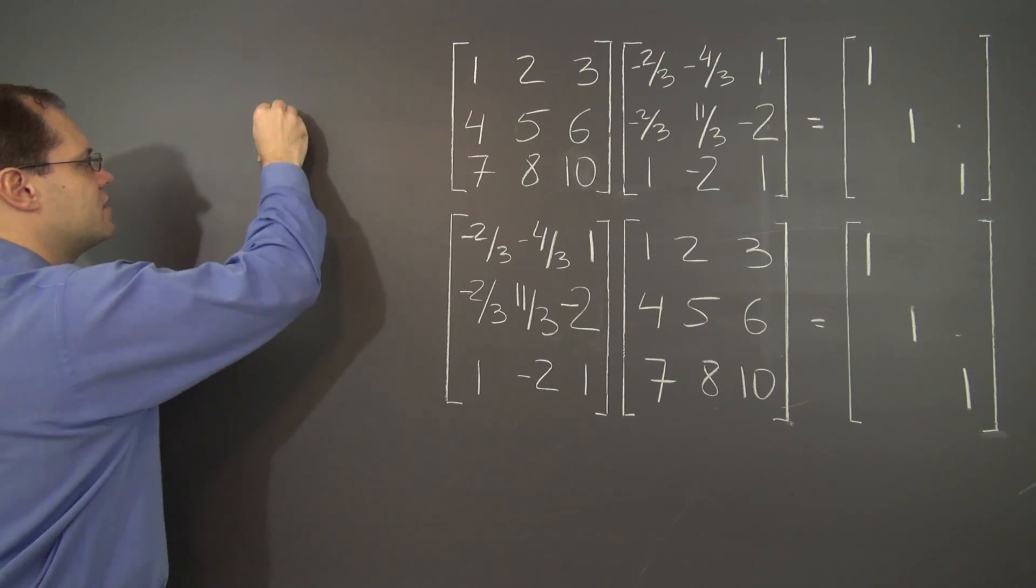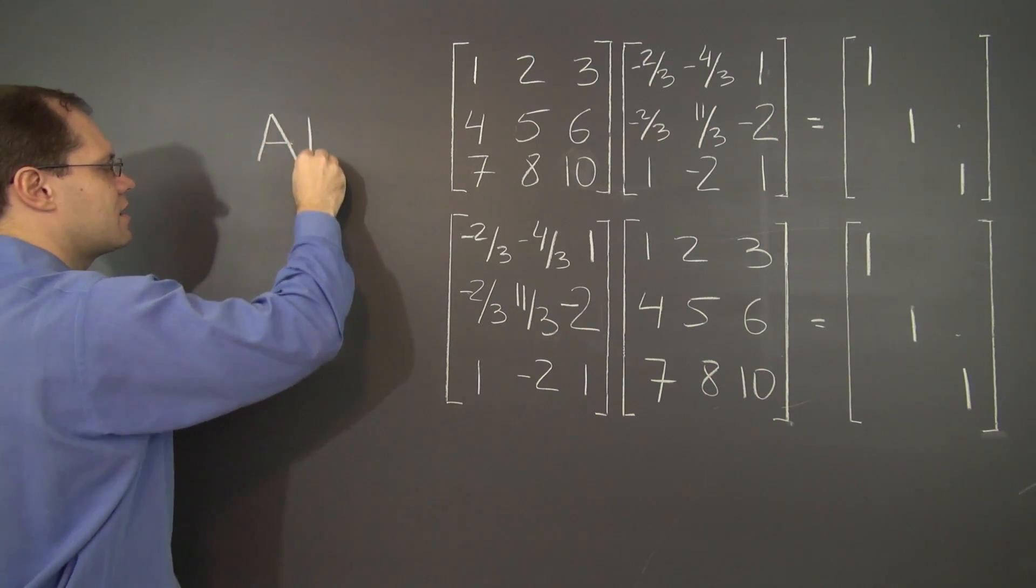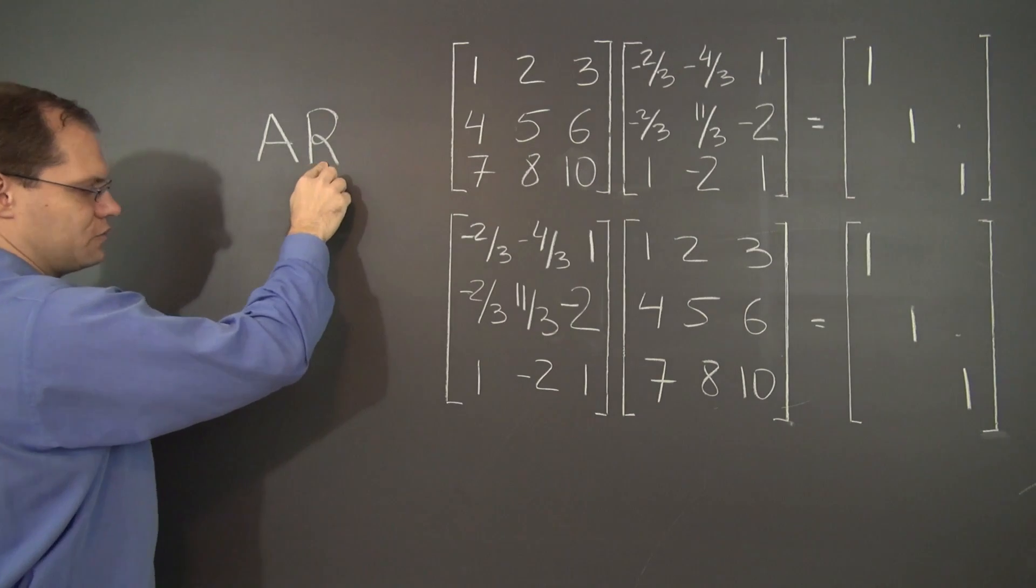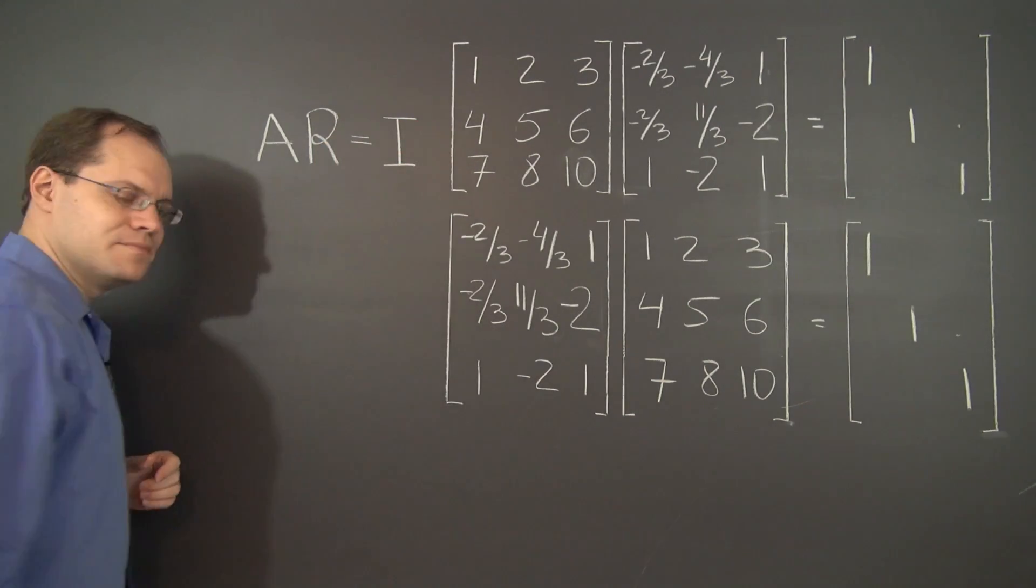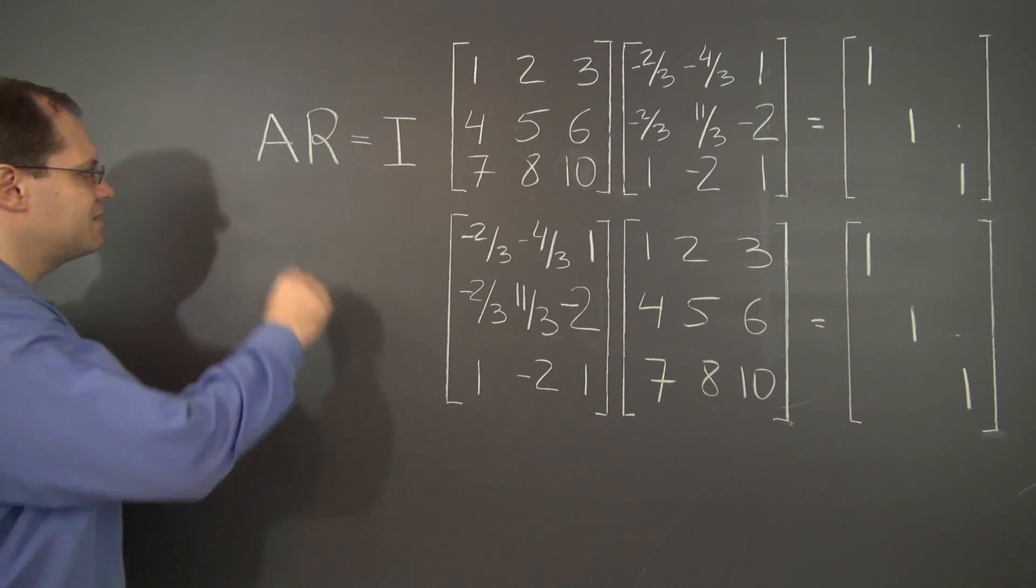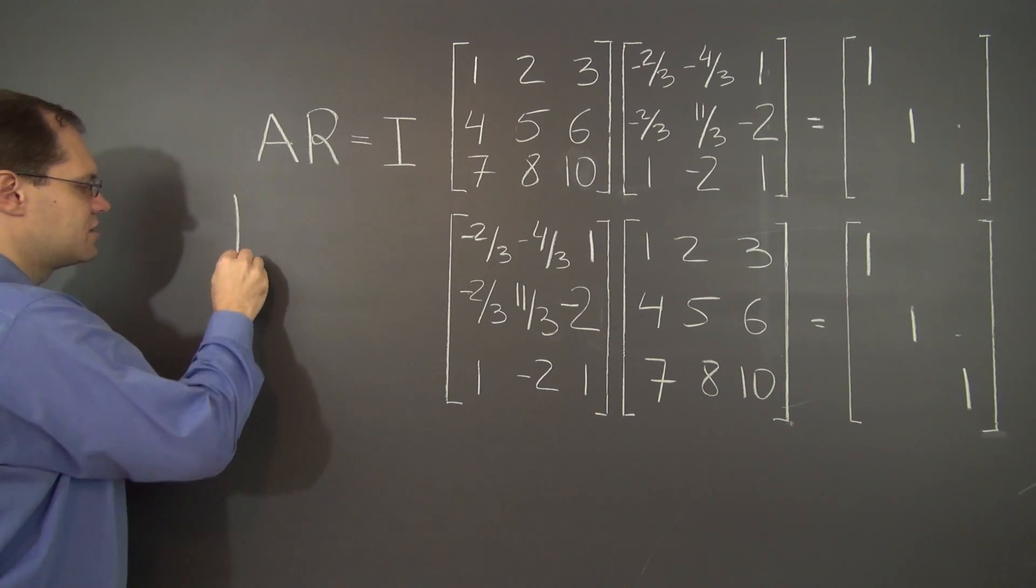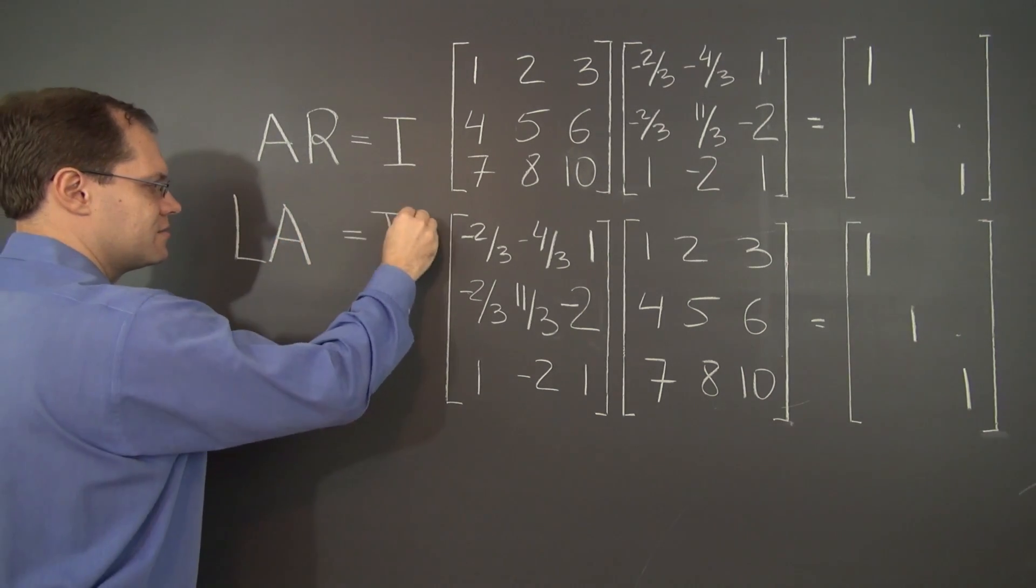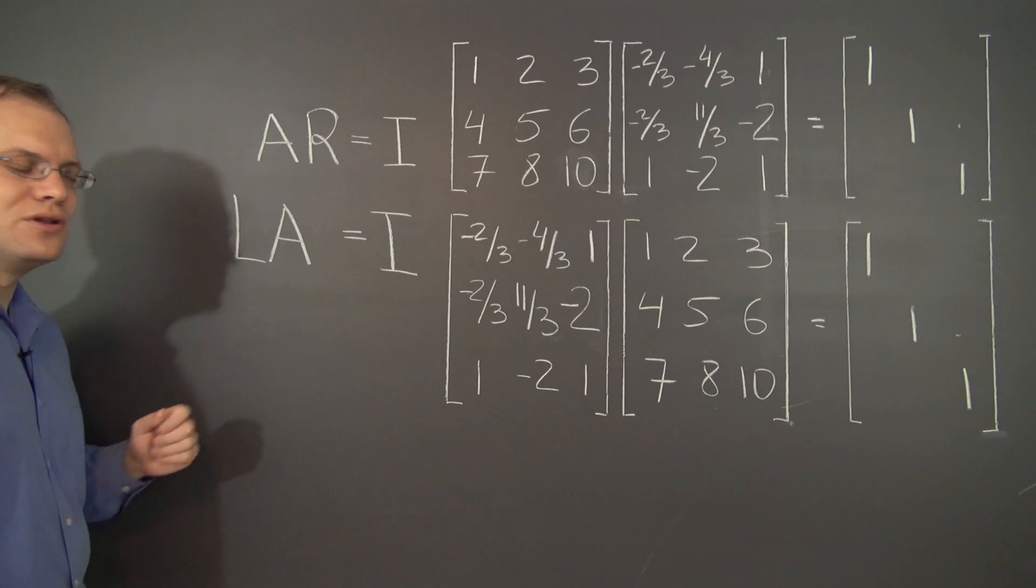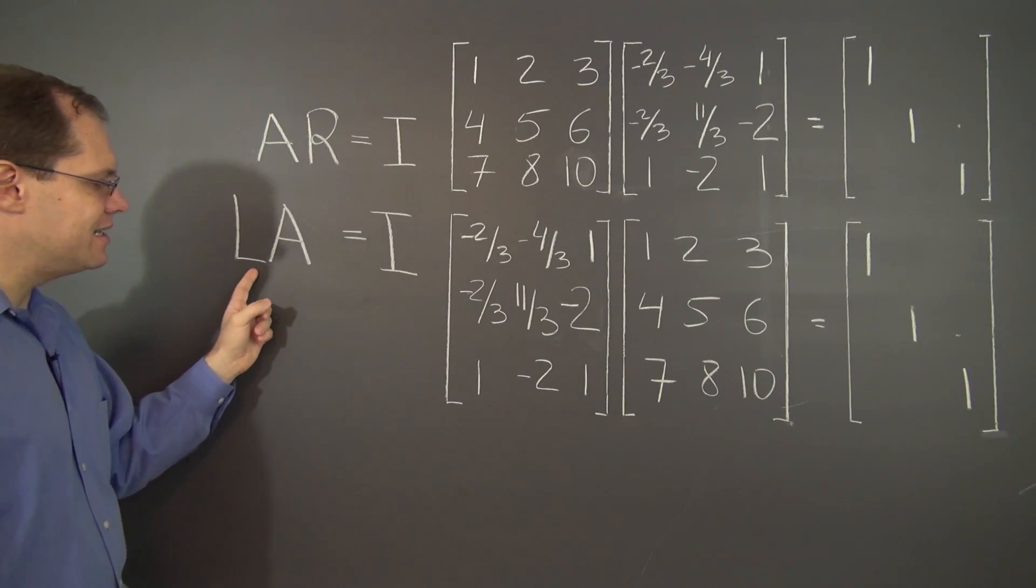So consider the right inverse. It's a matrix R, R for right, such that AR equals identity. And now consider the left inverse. It's the matrix such that LA equals identity. And our goal is to prove that R equals L.